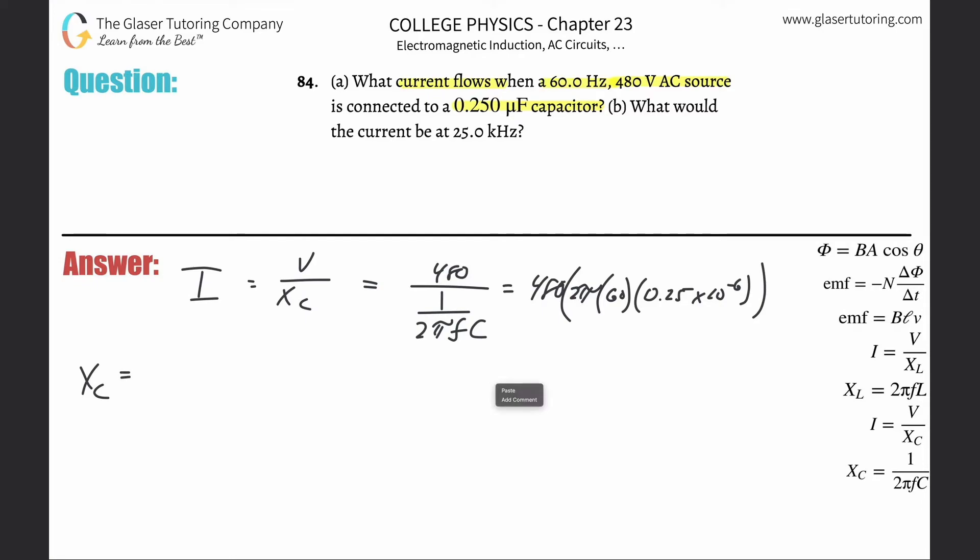And then all we simply do is just take out the calculator. So 480 times 2π times 60 times 0.25 times 10 to the minus 6.